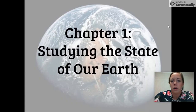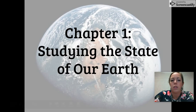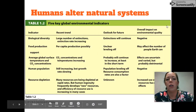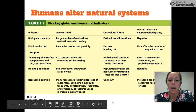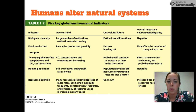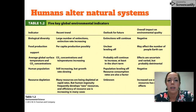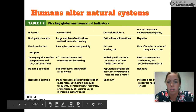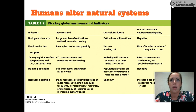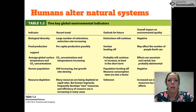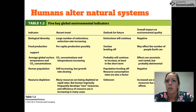Our first chapter is called 'Studying the State of Our Earth.' We've been talking about a lot of these things in class the past couple of weeks. One of the main points you need to know from chapter one — and this is just a little taste because we'll get into this later — is the fact that humans alter natural systems. Humans manipulate their environment more than any other species. We convert land from its natural state into urban, suburban, and agricultural areas.